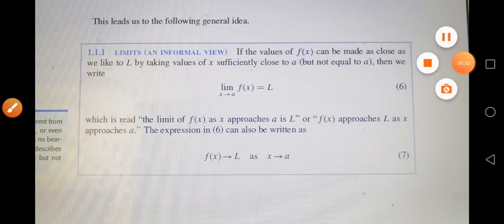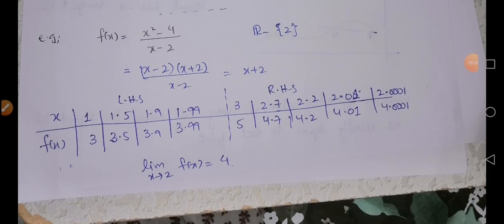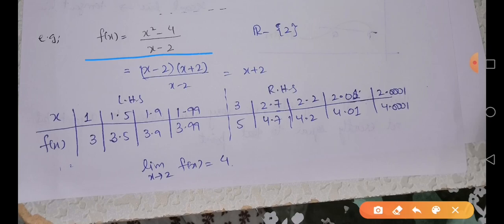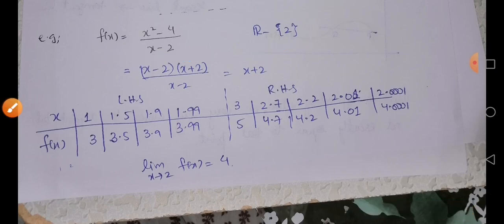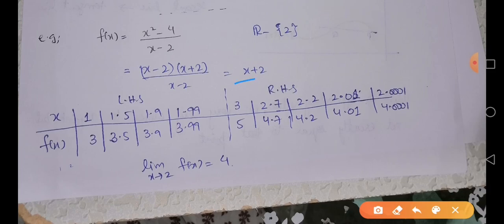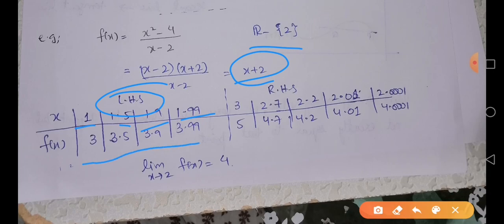As another example, consider f(x) = (x² − 4)/(x − 2). As discussed in precalculus, its domain is all real numbers except 2, because at x = 2 the denominator becomes 0. So we cannot find the functional value at x = 2. However, we can check whether the limiting value exists. Simplifying, the function becomes x + 2. Approaching x = 2 from the left hand side — taking values like 1, 1.5, 1.9, 1.99 — the function values get closer and closer to 4.